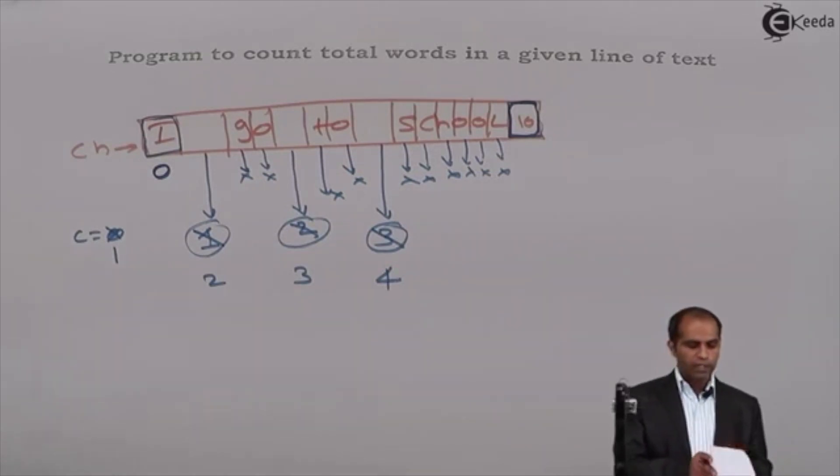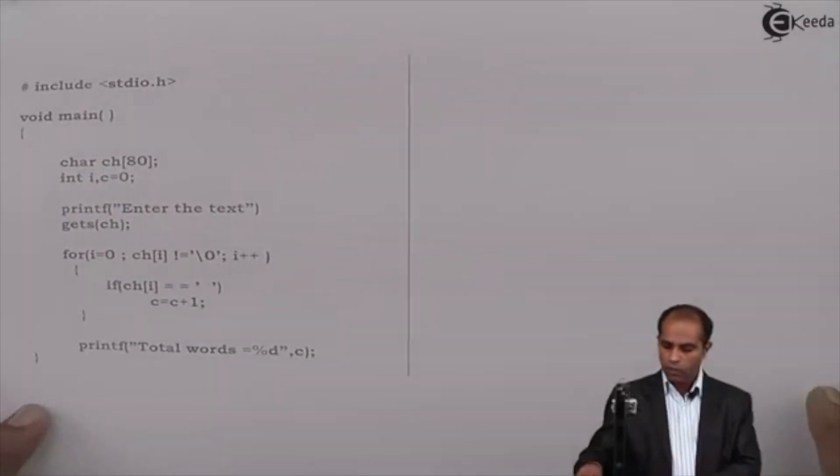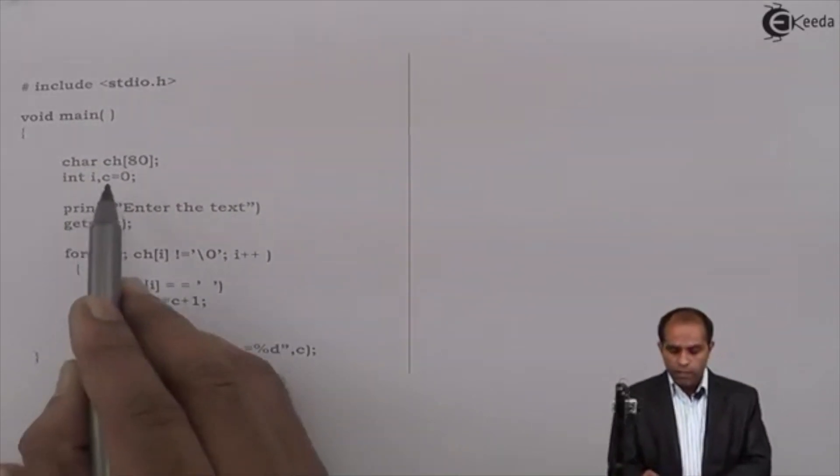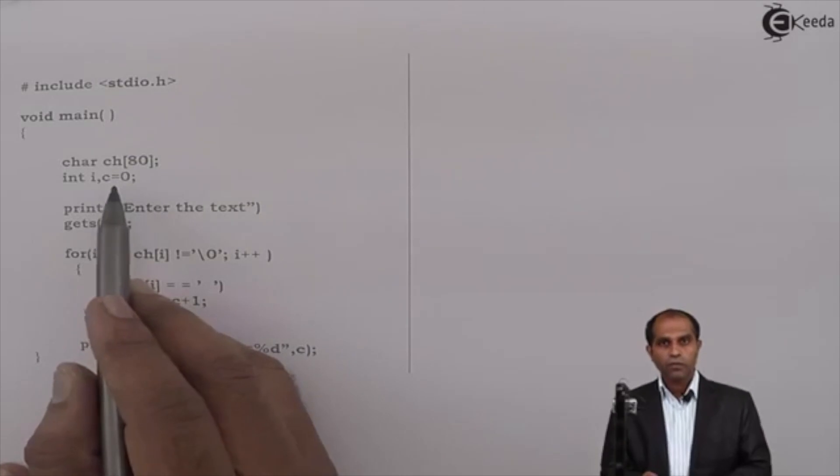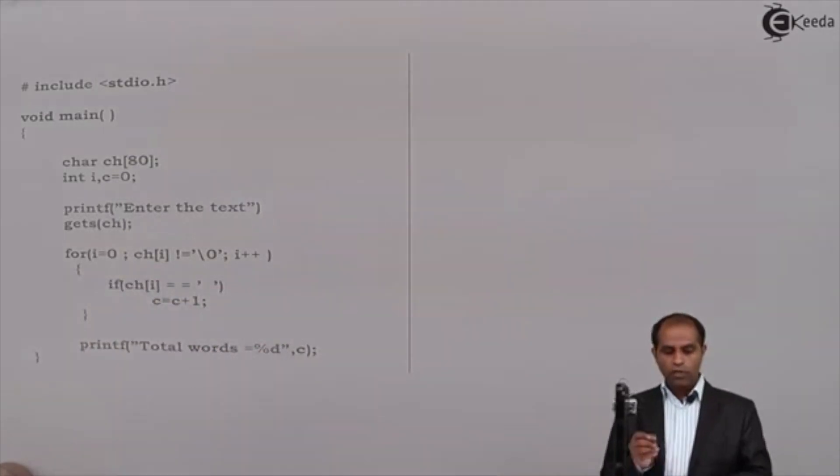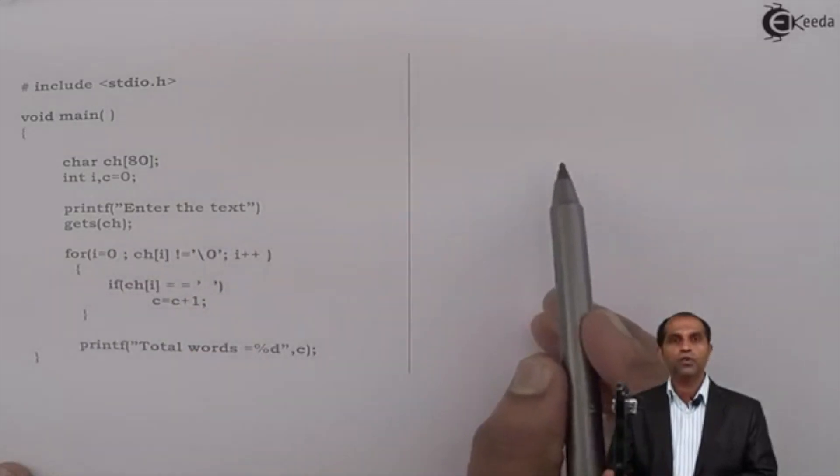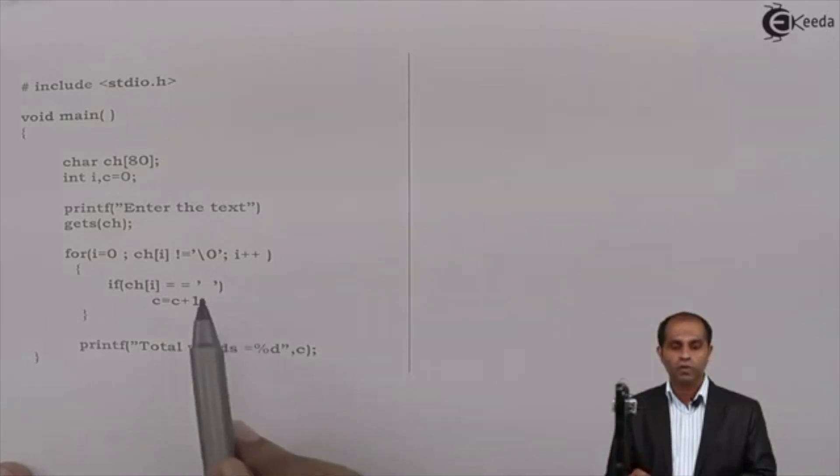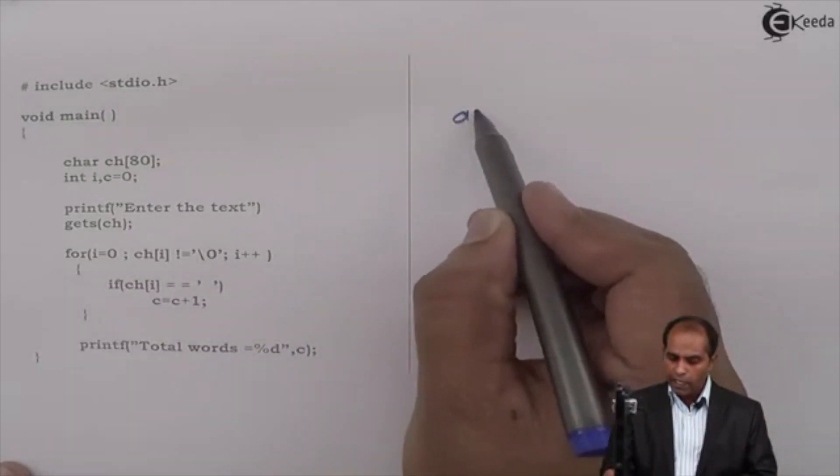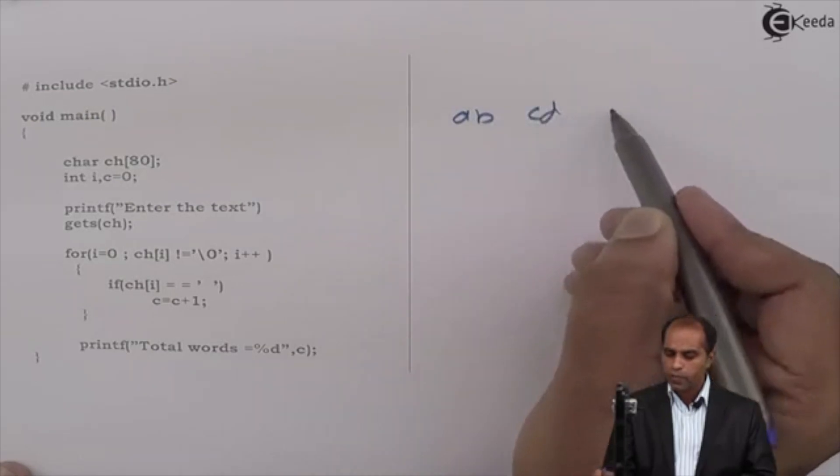Let's put the program to indicate this particular part. So I'll have C as zero, the counter as zero. I had to do some modifications in this code to help you with this particular modification. I'll ask the user to enter the text. I have read the text as I space go space to space school. For I equal to zero, CH of I not equal to null.